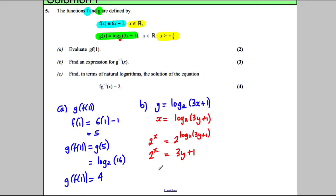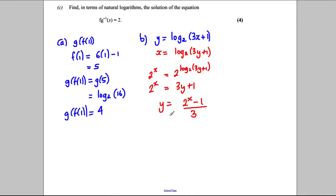Making y the subject of the formula, I can do in one move. I take away 1 and divide by 3, so 2 to the power of x take away 1 divided by 3. Therefore, state your inverse function: f inverse of x is 2 to the power of x take away 1 divided by 3.